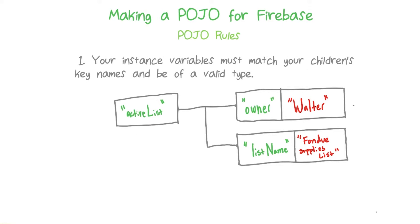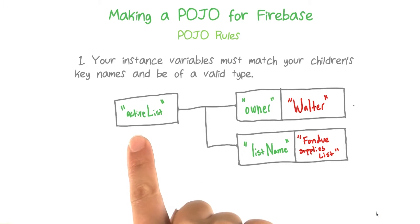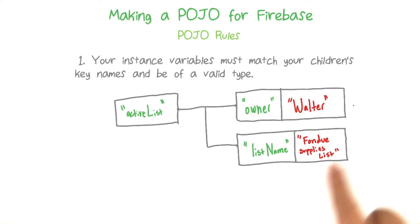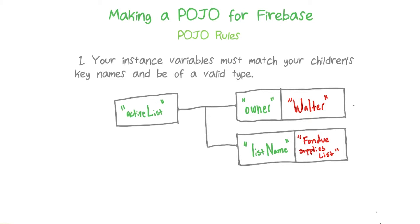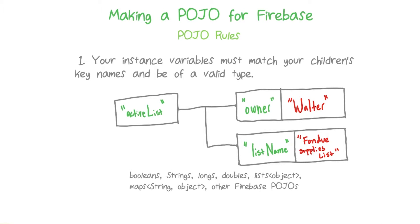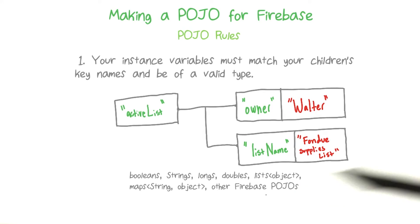The first rule is that every instance variable must match your children's key names in Firebase. When your object goes into Firebase, it's basically going to look like this — you'll have some sort of root node and then a bunch of properties that correspond to member variables of the object. These keys need to match the member variable names exactly. Also, the types for all these variables should be Java types that Firebase can handle: booleans, strings, longs, doubles, lists containing objects that are any of these, maps containing strings and objects that are any of these, and any other Firebase POJOs.